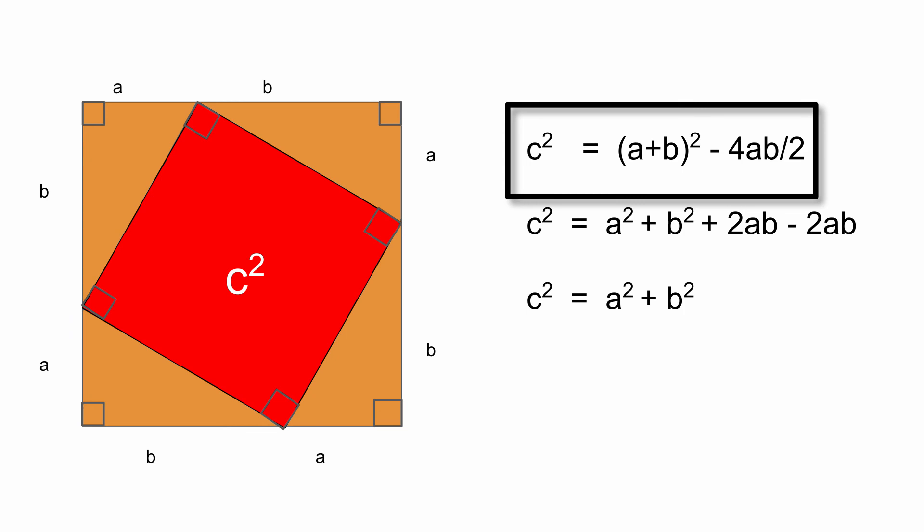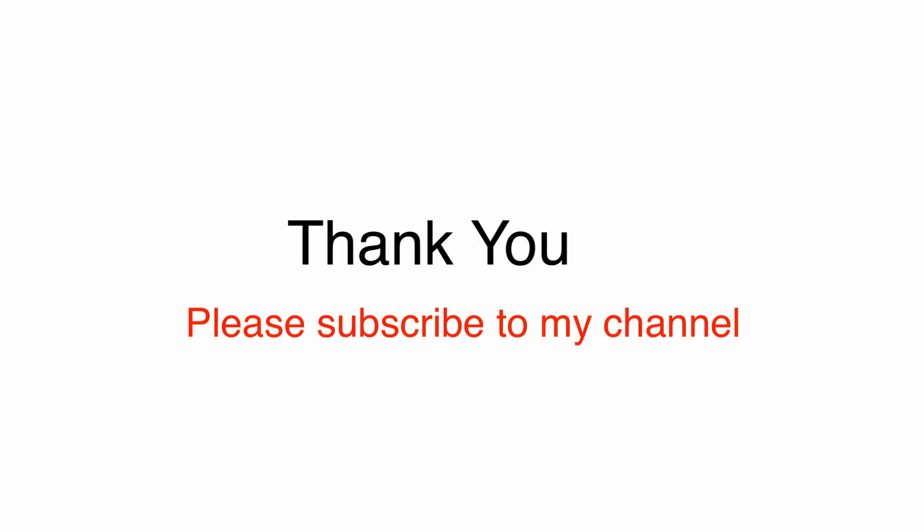We start by expanding a plus b whole squared into a squared plus b squared plus 2ab, and then we simplify this 4 times a, b over 2 into minus 2ab. So that means these 2abs cancel out, and you're left with a squared plus b squared, but we started with c squared. So that means a squared plus b squared equals c squared.